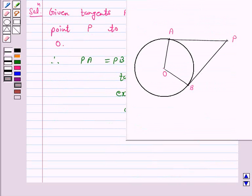Again we are given tangents PA and PB from a point P to a circle with center O are inclined to each other at angle of 80 degrees.